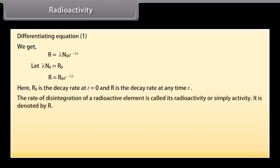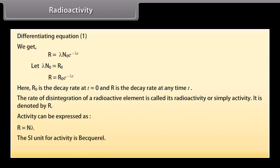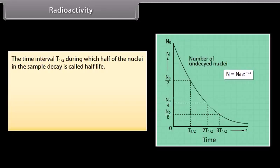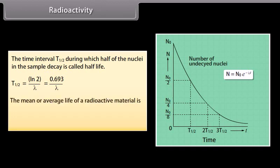The rate of disintegration of a radioactive element is called its radioactivity or simple activity. It is denoted by R. Activity can be expressed as R is equal to Nλ. The SI unit for activity is becquerel. 1 becquerel is equal to 1 Bq is equal to 1 decay per second. The time interval t-half during which half of the nuclei in the sample decay is called half-life. T-half is equal to ln2 by λ, which is equal to 0.693 by λ. The mean or average life of a radioactive material is τ which is equal to 1 by λ.